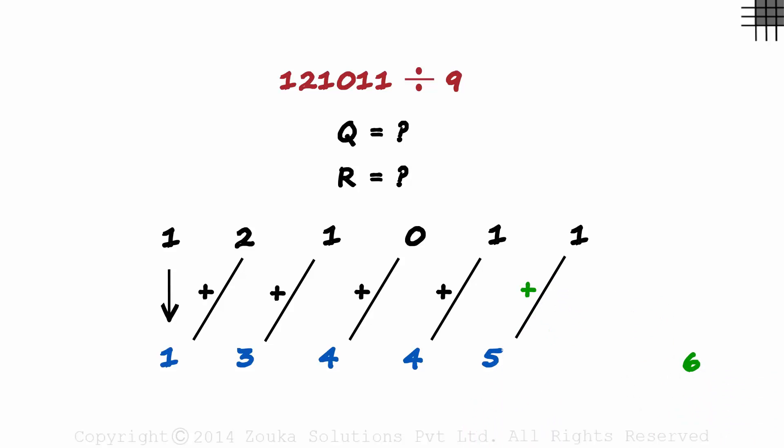Yes, there is a reason why we have written this in a different color. 6 is the remainder and this part is the quotient. Yes, we got the quotient as well as the remainder without performing the division process.